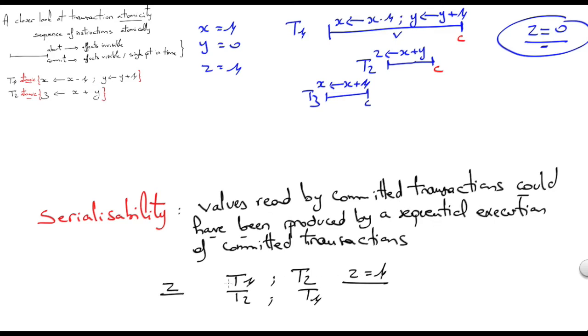Now we would have three committed transactions. So the value of z could be either 1 if we had T1, T2 and then T3, or it could be 2 if we had T3, for example, T1 and then T2. So both cases are possible.